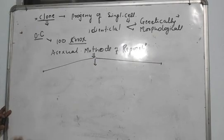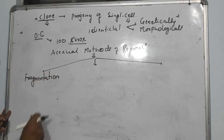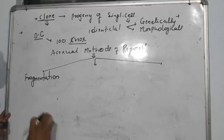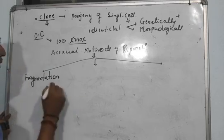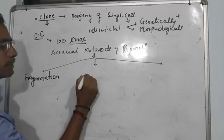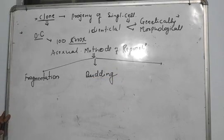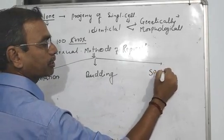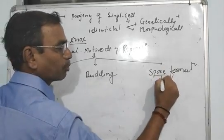The first method is fragmentation. In theory question, describe method of asexual reproduction. First method is fragmentation, second method is budding - we get unicellular and multicellular, and third one is spore formation.